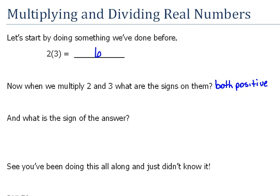When we first learned how to multiply, we didn't think about them as being positive numbers, but now we understand that they truly are. And what about the answer? What is the sign of our answer here? Well, it happens to also be positive. You have been using the rules of positive and negative numbers ever since you started learning how to multiply. You just didn't realize that's what you were doing.